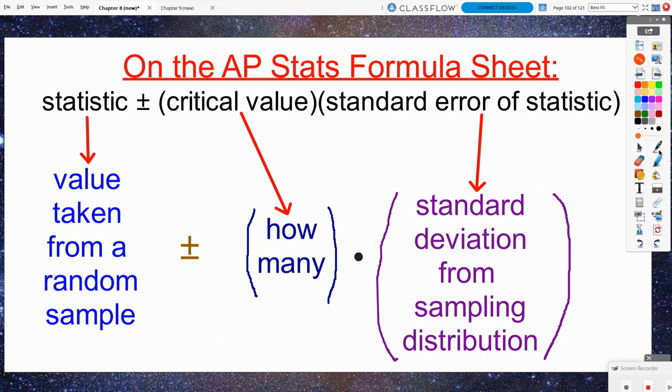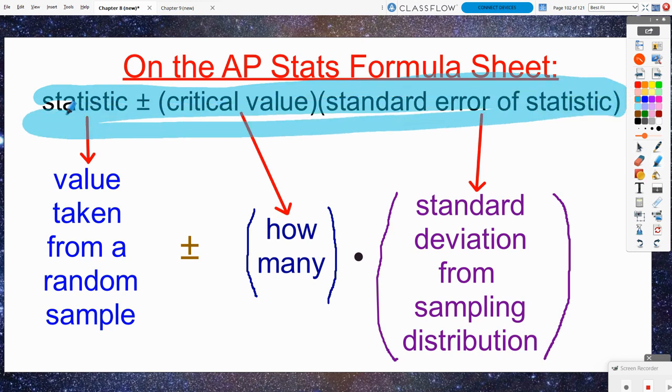Keep in mind on the formula sheet, you aren't really given much help here. You're told in general, generically, this particular formula: you want to take a statistic plus or minus a critical value times the standard error of the statistic. Our statistic is our point estimate, the value taken from our sample.